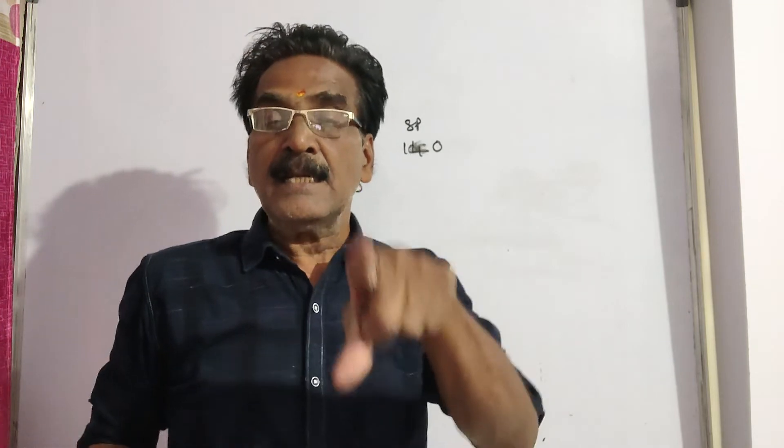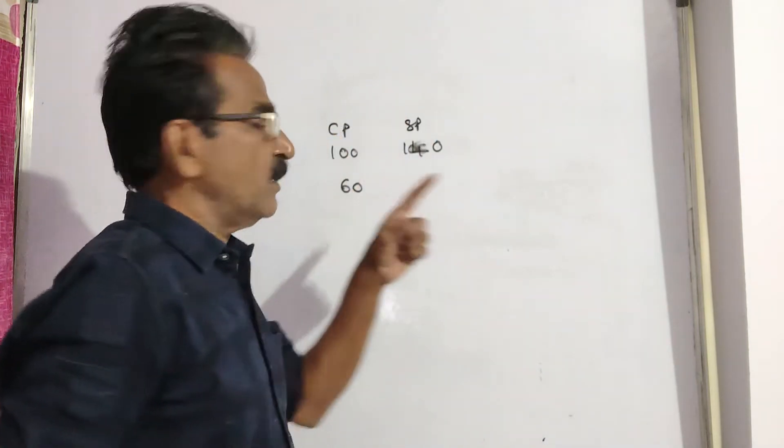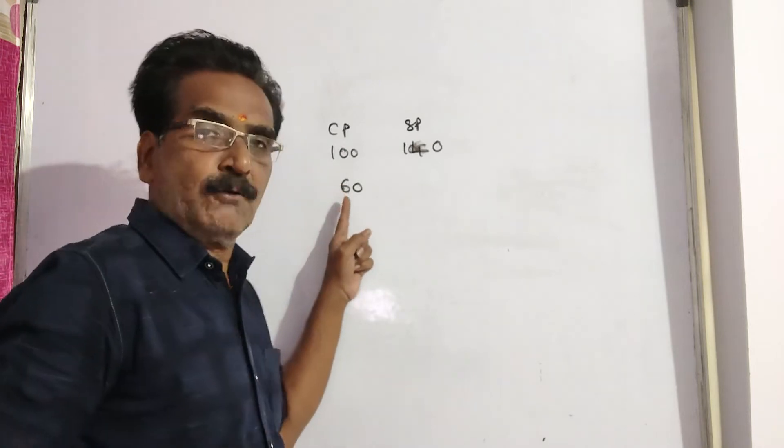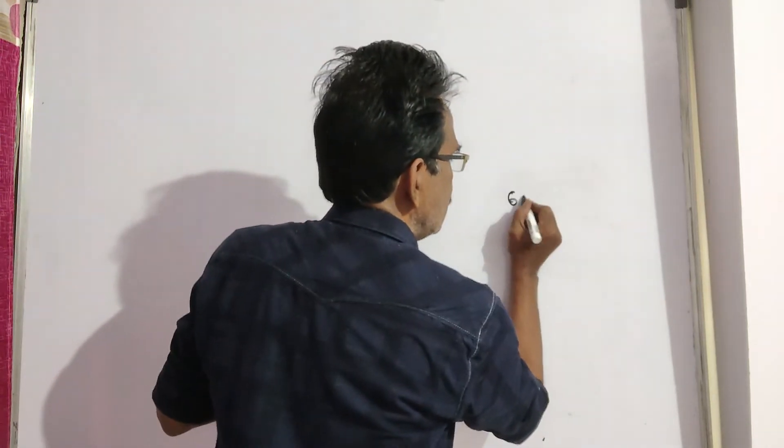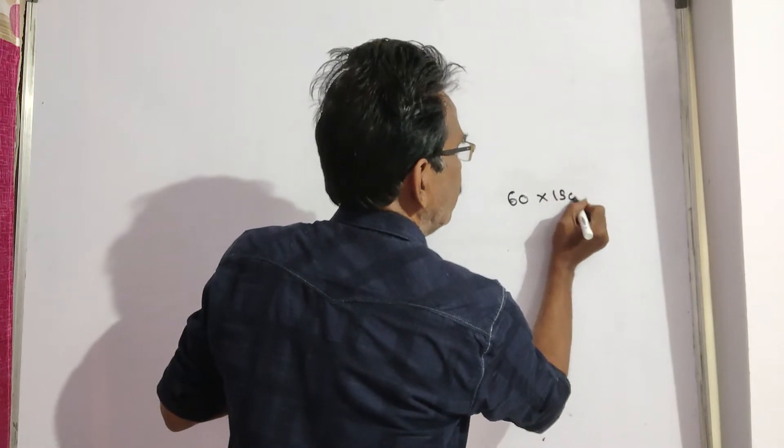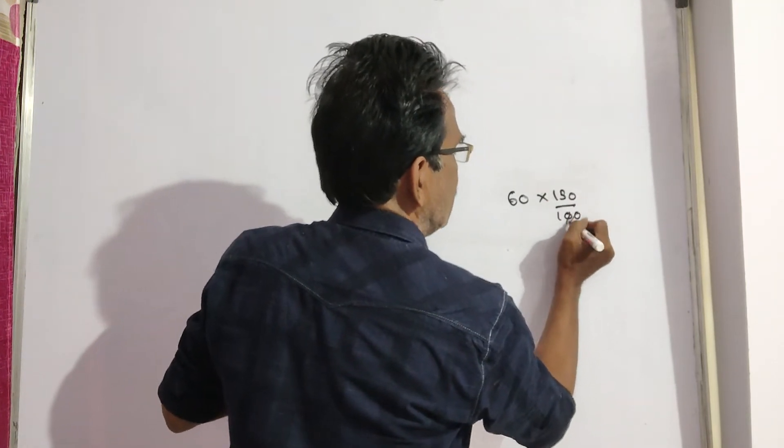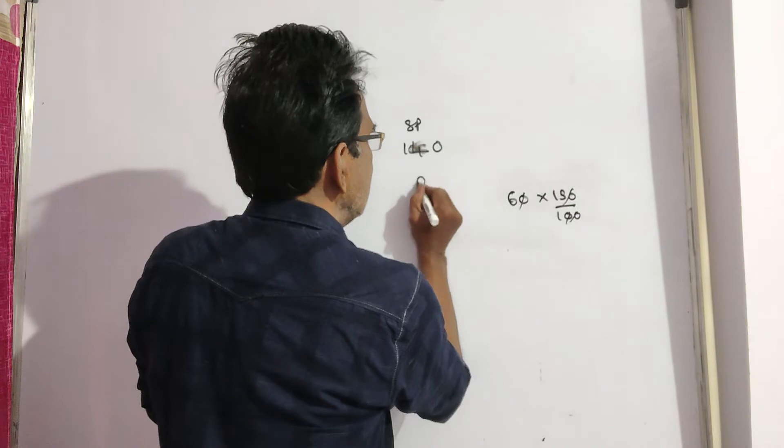And sells it 5 rupees less than the earlier sold price, then he would have gained 50%. So, 50% profit on rupees 60 means, then the sold price will be 60 into 150 by 100, that is equal to 90.